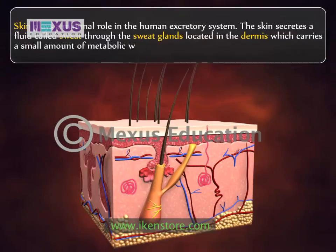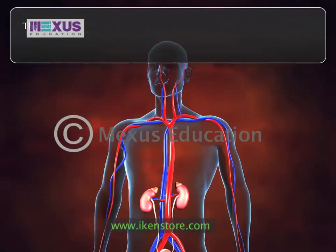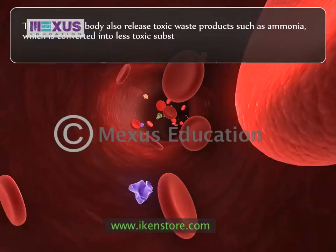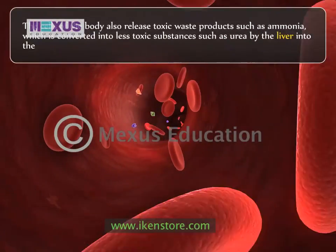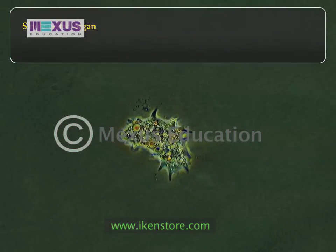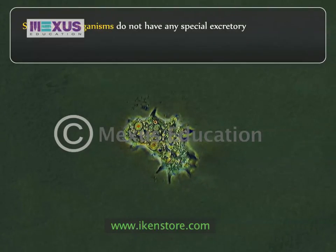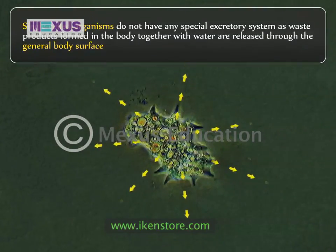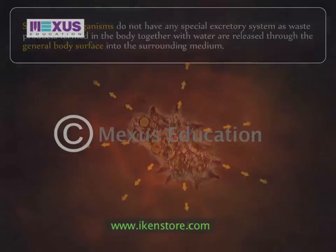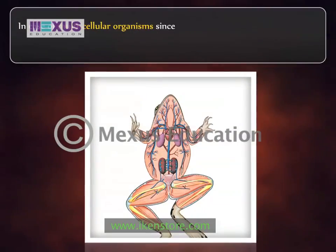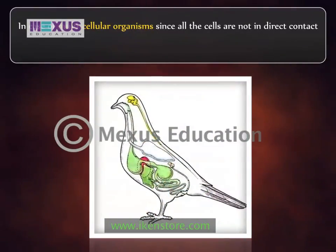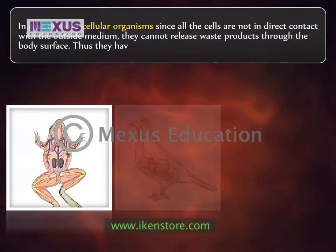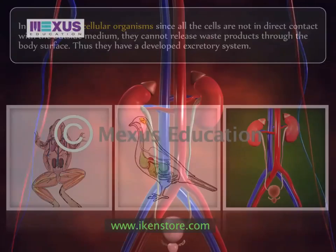The skin secretes a fluid called sweat through the sweat glands located in the dermis, which carries a small amount of metabolic wastes. The cells of the body also release toxic waste products such as ammonia, which is converted into less toxic substances such as urea by the liver into the bloodstream. Single-celled organisms do not have any special excretory system, as waste products formed in the body together with water are released through the general body surface into the surrounding medium.